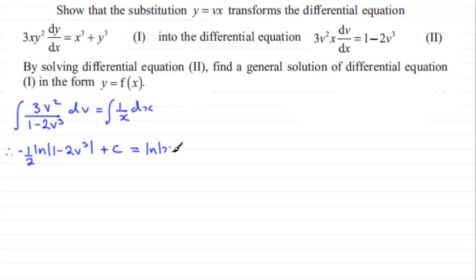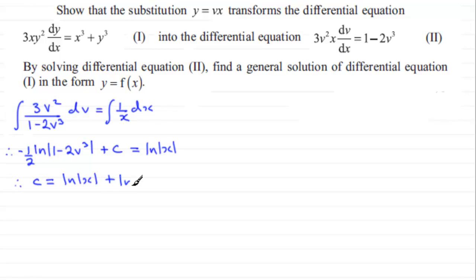Now we want to group together the log terms. I'm going to add the log term to both sides to give c equals the natural log of the modulus of x, plus — using the power rule for logs — I'll take the half up as a power, giving plus the natural log of the modulus of 1 minus 2v cubed to the power of a half.